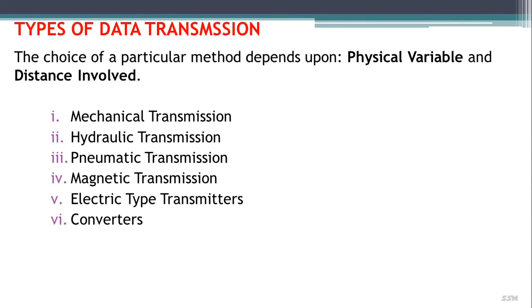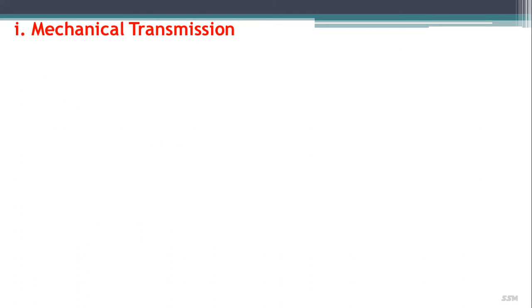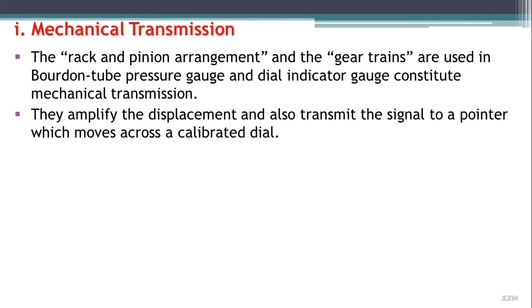The different types of data transmission are: mechanical, hydraulic, pneumatic, magnetic, and electric type transmitters and converters. Starting with mechanical transmission — the rack and pinion arrangement and gear trains are used in a Bourdon tube pressure gauge and the dial indicator gauge. They amplify the displacement into a transmitted signal to a pointer which moves across a calibrated dial.